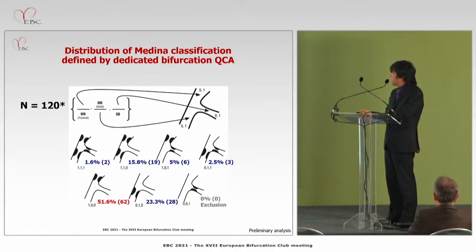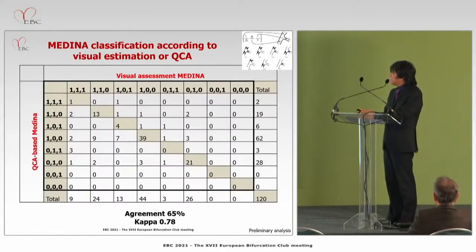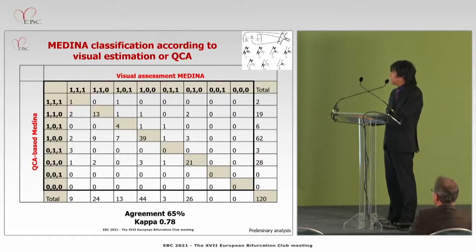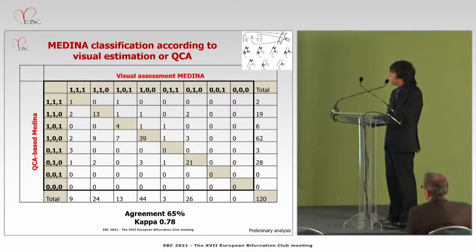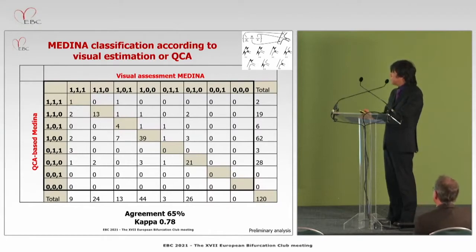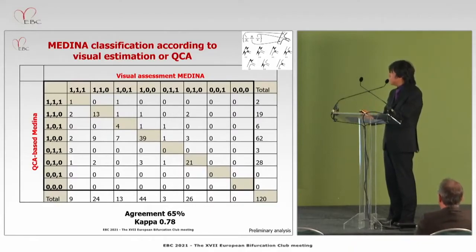The distribution of Medina classification defined by dedicated bifurcation QCA showed: 52% of cases had Medina 1-0-0, followed by 0-1-0 at 23%, and 1-1-0 at 16%. Looking at concordance between visual assessment of Medina classification by investigators versus QCA-based Medina classification, agreement was achieved in only 65%. For example, for the 1-1-1 classification, nine cases were assessed visually as 1-1-1 by investigators, but only one case fulfilled this criteria by QCA. Basically, visual assessment overestimates the Medina classification in most cases.